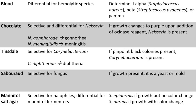Next we have the Sabouraud agar plate, which is selective for fungus. If growth is present, the species on the plate is either a yeast or a mold. If the texture is mucoid or buttery, it is typically a yeast, and if it is fuzzy, it is typically a mold.